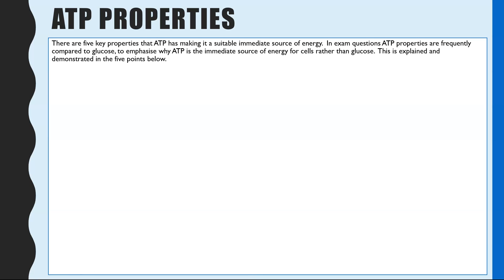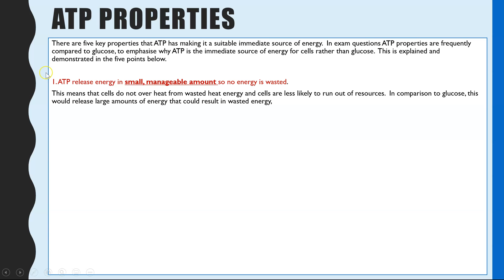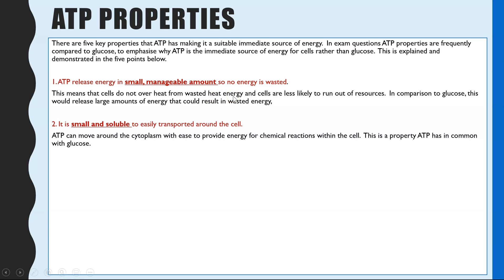Looking at the key properties of ATP that make it different from glucose as an energy source: ATP is an immediate energy source. First, it only releases small, manageable amounts of energy when the bond between the phosphate groups is broken, whereas breaking down glucose releases large amounts of energy. This means less energy is wasted; if more is needed, you simply hydrolyse more ATP. It also prevents the cell from overheating, since much wasted energy takes the form of heat.